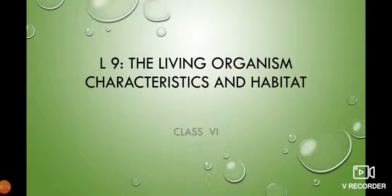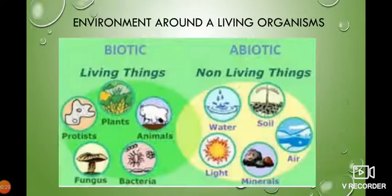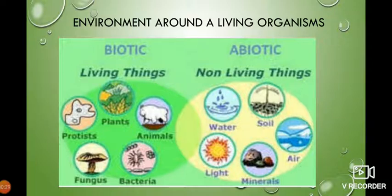What do you mean by a living organism? All the living things around you are called living organisms. Does a living organism live on its own, or does it have requirements? It needs certain things — you need water, you need air, you need food. So living things cannot be on their own; they take things from their surroundings.